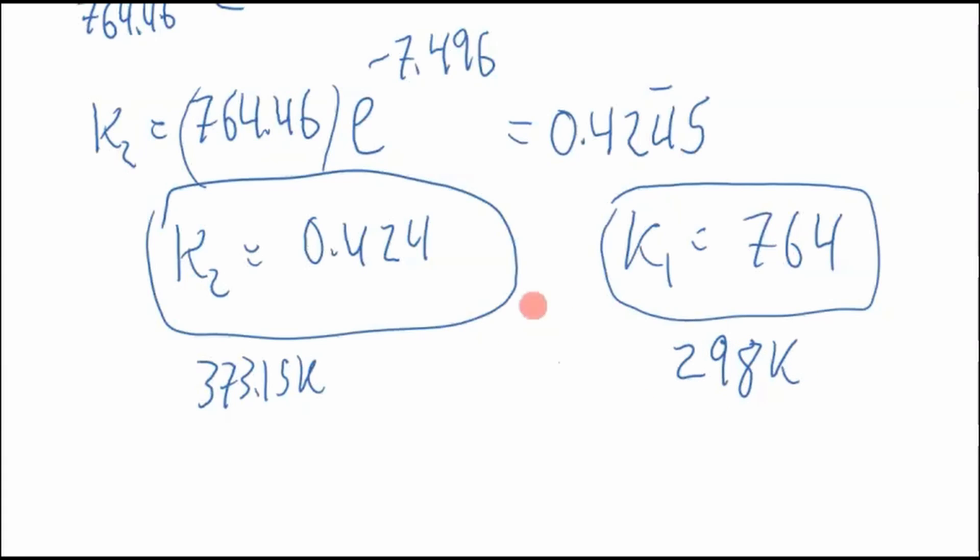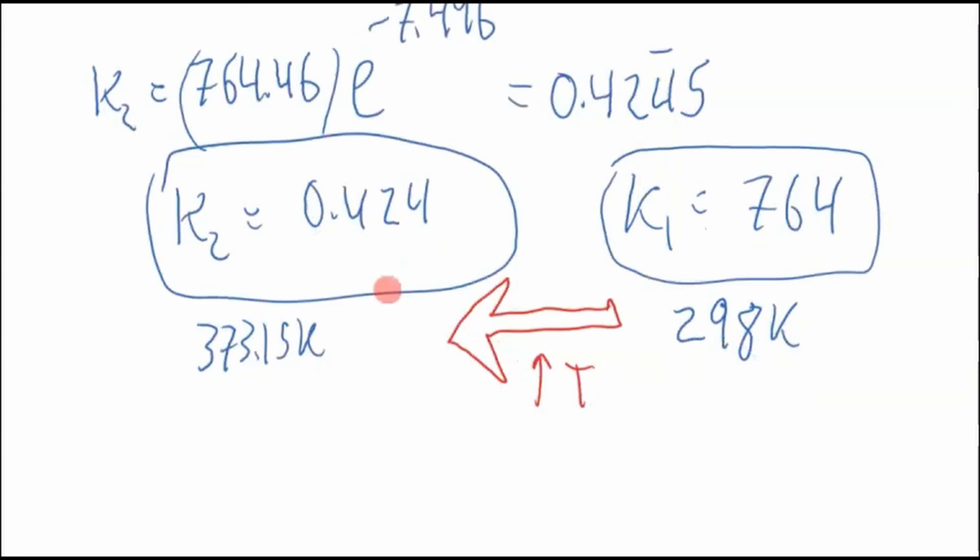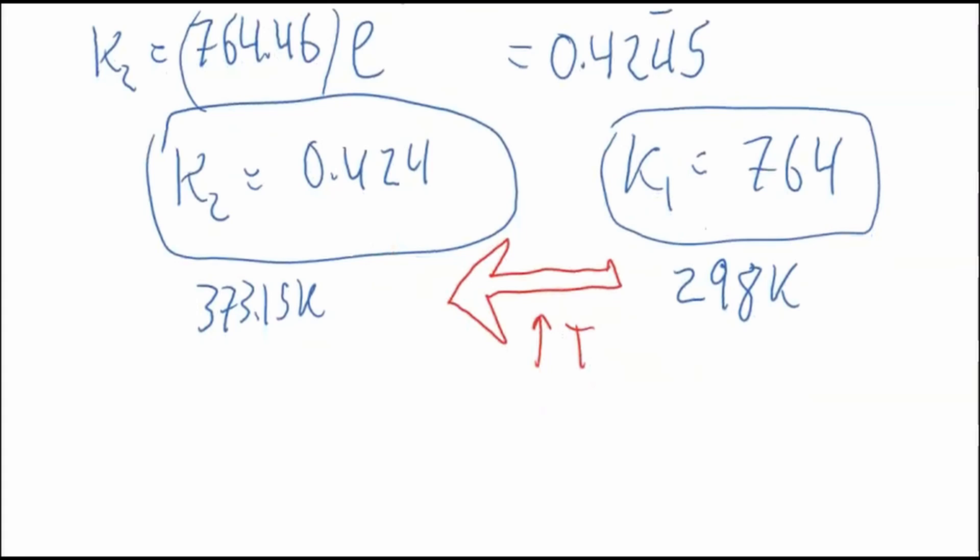But we decreased the equilibrium constant. And the equilibrium constant is products divided by reactants, the activities or the concentrations, pressures, the products over reactants. Technically, it's the activities. Well, this went down.